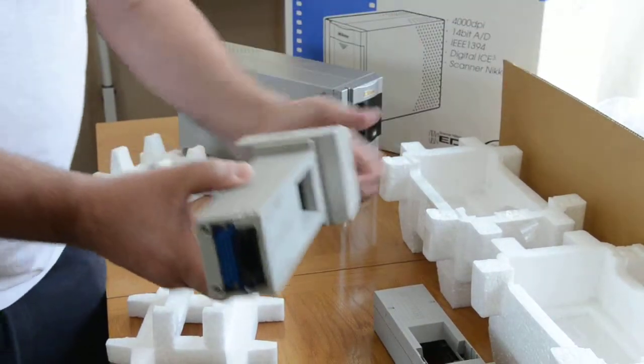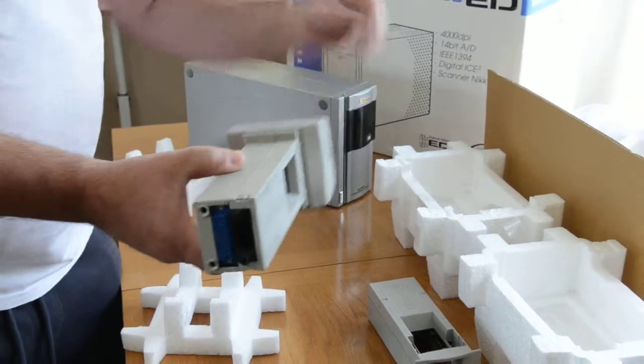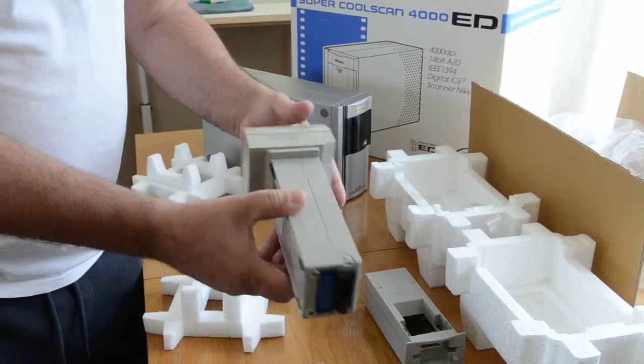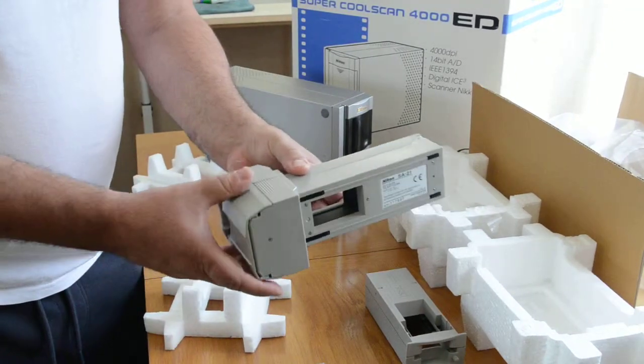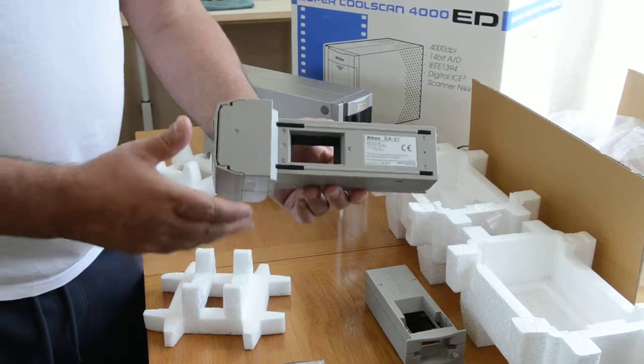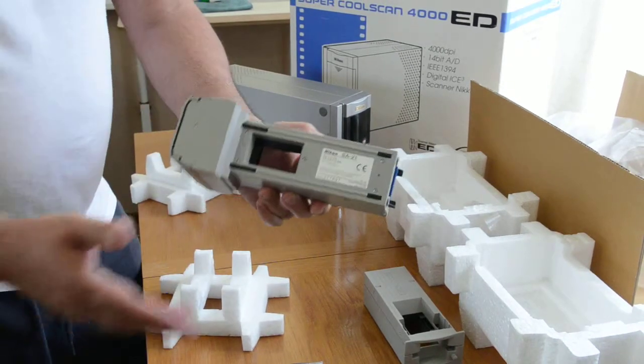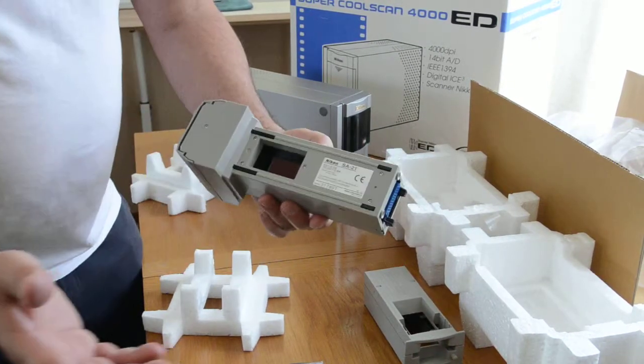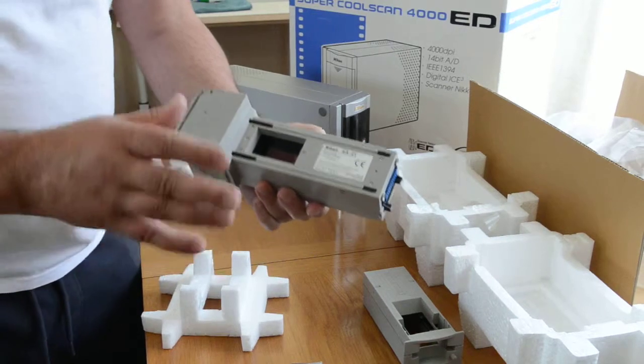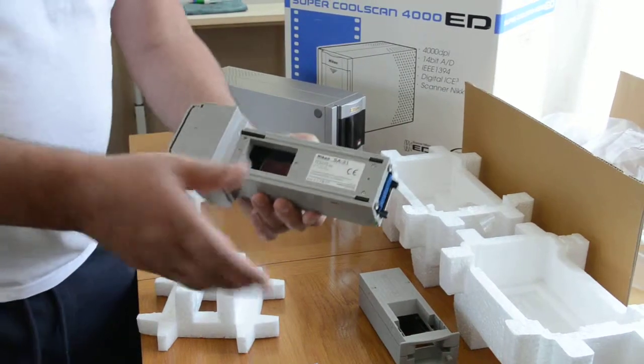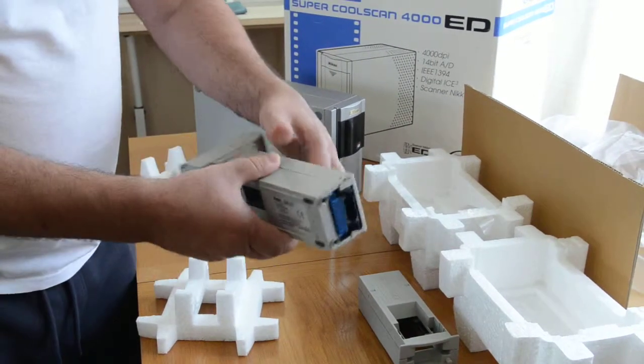Before there were digital cameras there were film cameras, and people still use film cameras today. You might have pictures way back when of your grandparents, your great-grandparents, or something like that and you want to save those memories. So you take them and you put those negatives onto this box right here.